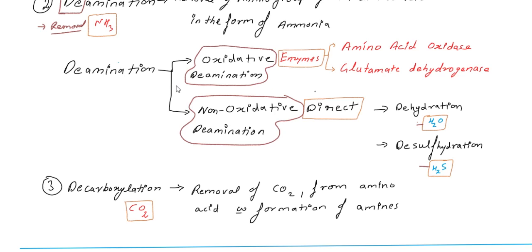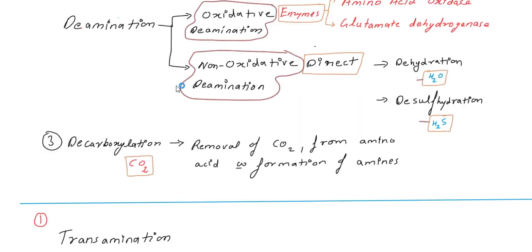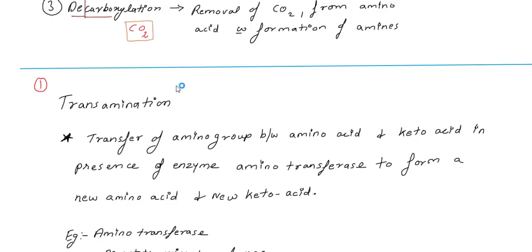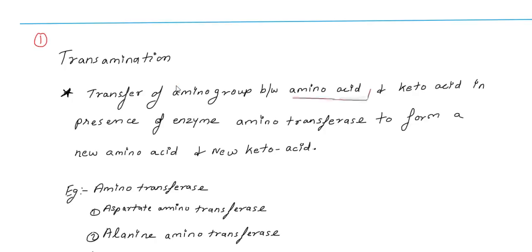The third reaction is decarboxylation, which is the removal of carbon dioxide from an amino acid. Now, transamination by definition is the transfer of an amino group between an amino acid and a keto acid, with the help of the enzyme aminotransferase.